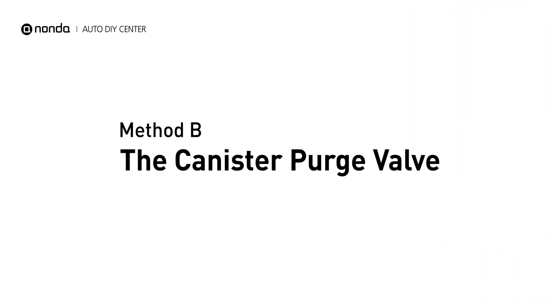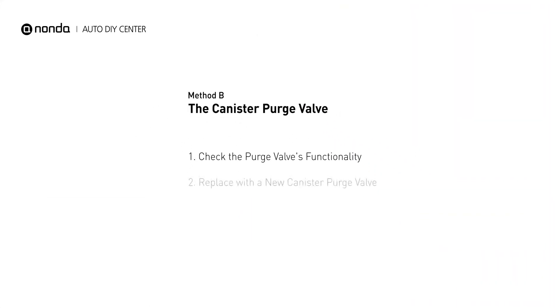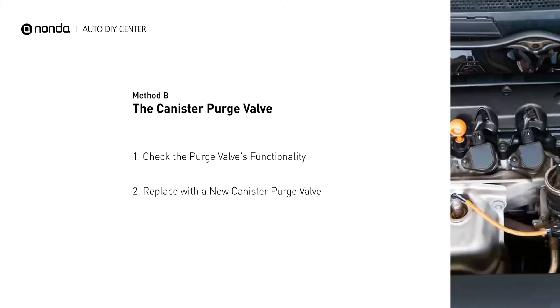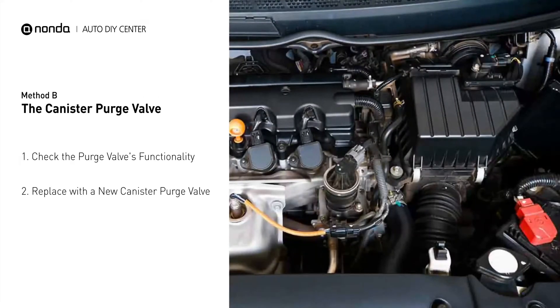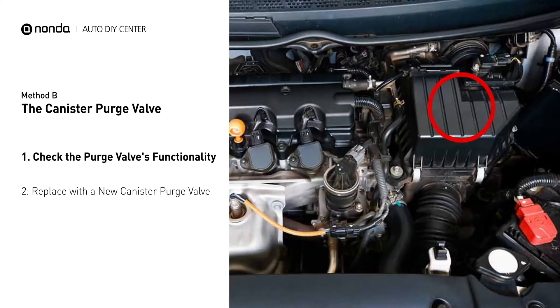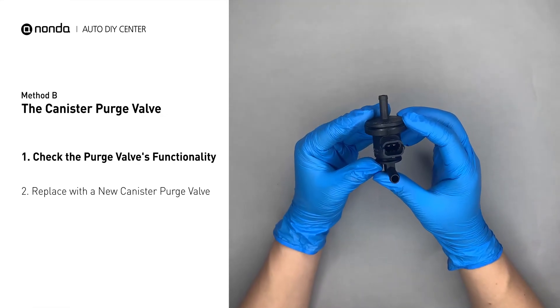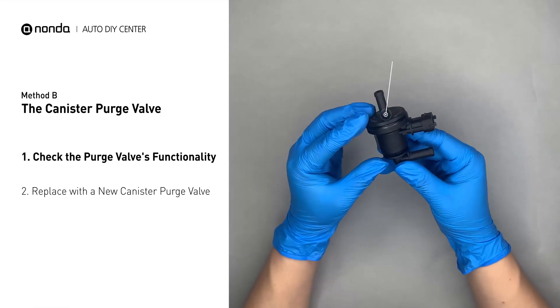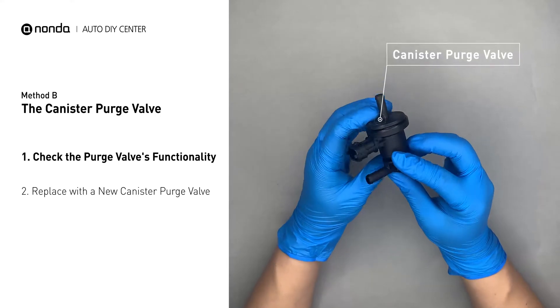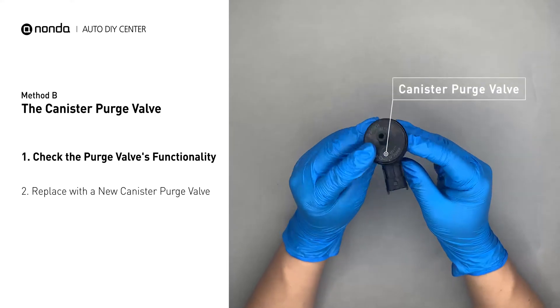Method B: the canister purge valve. The canister purge valve is usually located behind the intake right next to the throttle body. For demonstration purposes, we have removed the canister purge valve prior to filming.